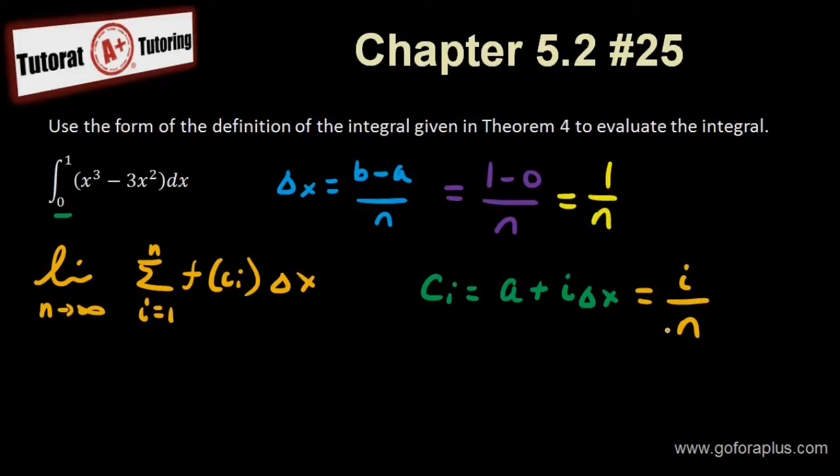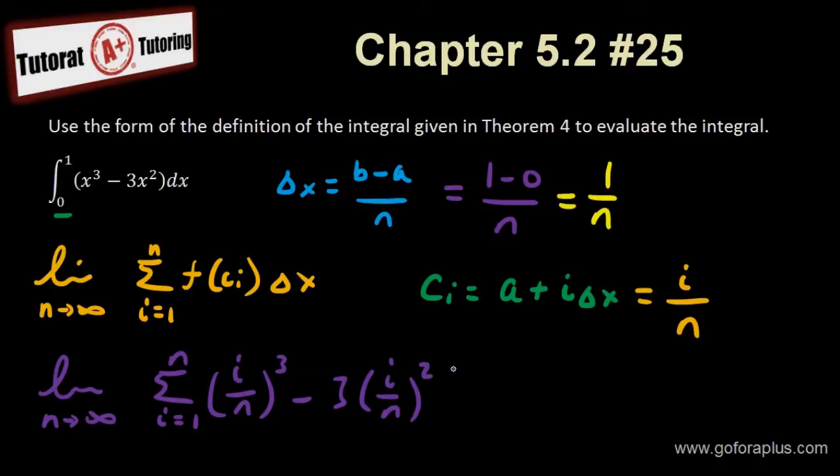So I have to replace i over n into my function here, so that I can substitute into the summation. So let's do that. Limit of n approaching to infinity, summation i equals to 1 until n. The function is x cubed. Whenever you see x, you have to replace it with ci. So I have i over n to the cube minus 3 times i over n to the square. All that times delta x, which is 1 over n. So this is what I need to evaluate using the definition of the integral given in theorem 4.